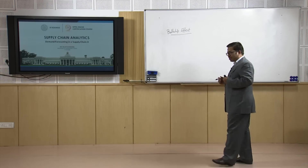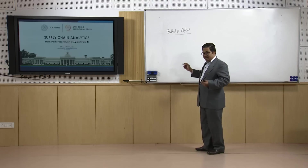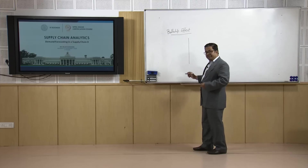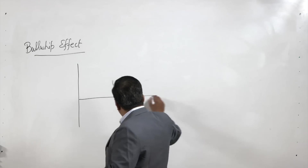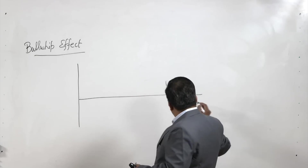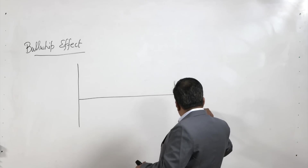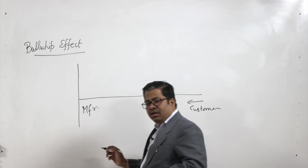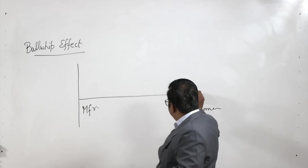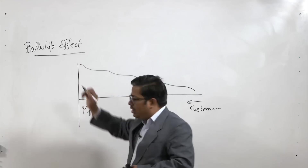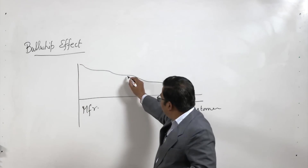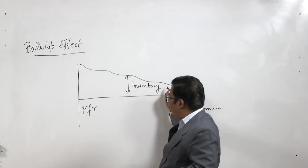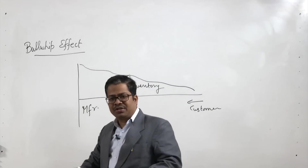The bullwhip effect is one of the important parasites to the profit of a supply chain. Because of poor forecasting and lack of trust in a supply chain, we do individual forecasting at different stages, and as we move from the customer side to the manufacturer side, we keep piling up inventories. As a result of these inventories, the profit of your supply chain goes down.